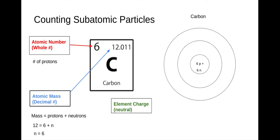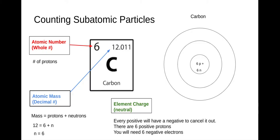The elements on the periodic table are neutral, so every positive will have a negative to cancel it out. There are six positive protons; therefore, you will need six negative electrons. So carbon has six protons, six neutrons, and six electrons. Now not every atom will have an equal number of protons, neutrons, and electrons — it just so happens that they're the same in this example.